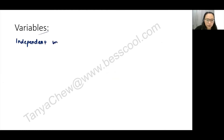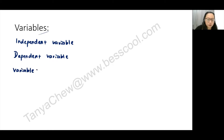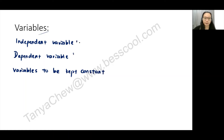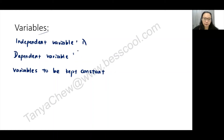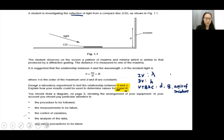Now writing out the variables formally: my independent variable is λ (wavelength), my dependent variable is h, and the variables to be kept constant are d, b, and the angle of incidence. The angle of incidence must be kept constant because it is not part of the relationship we are testing, which is between h and λ only.